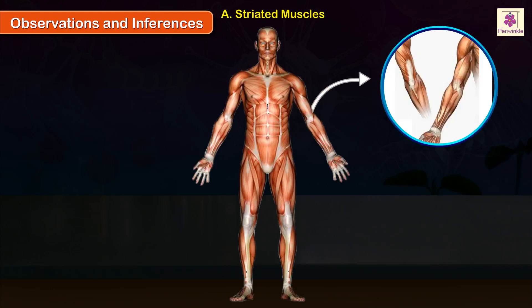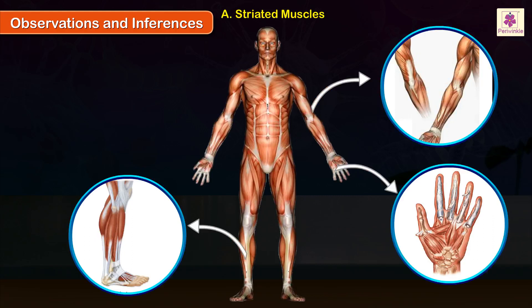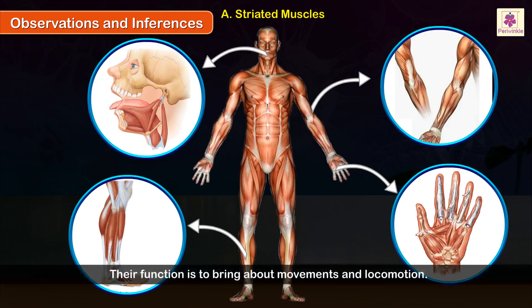Examples of skeletal muscles include the muscles in the hands, palms, fingers, legs, tongue, etc. Their function is to bring about movements and locomotion.